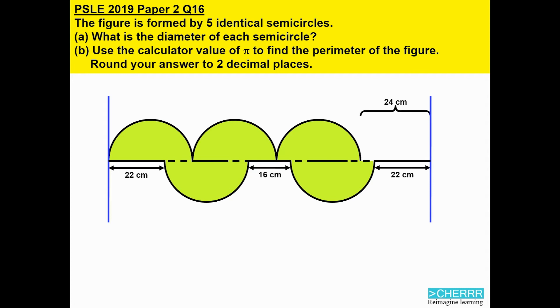I will now do the same with the 2 semicircles on the bottom. I'm going to push them to the left. Then I'm going to push the 3 straight lines, 22, 16 and 22 all the way to the right. That will get me 60 cm.